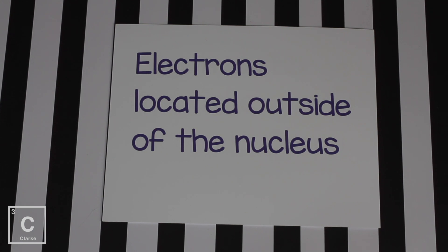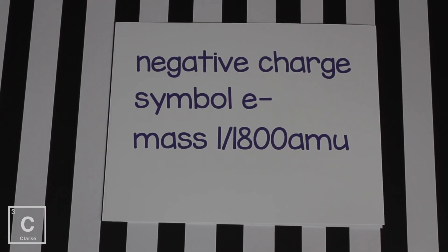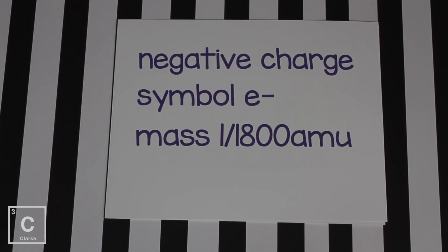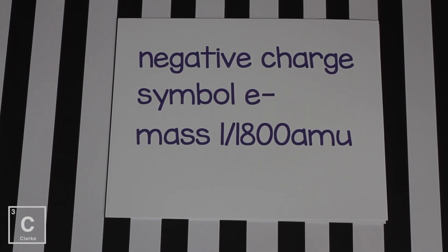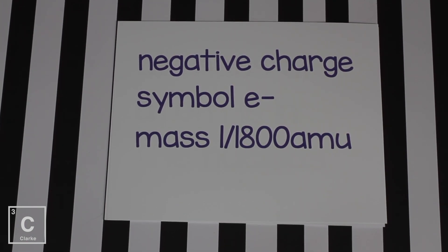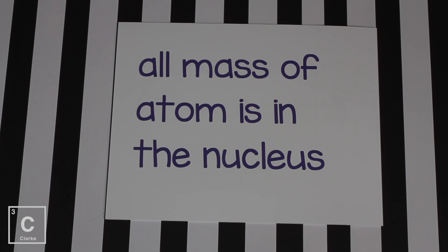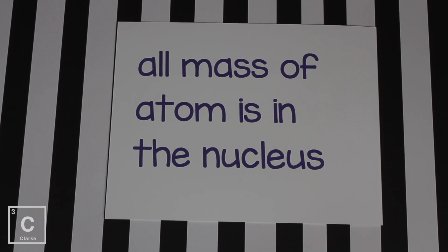Electrons are located outside of the nucleus. They have a negative charge, so their symbol is lowercase e with a negative superscript. Look at that mass — 1/1800 of an AMU. Yes, you're seeing that right. Electrons are teeny tiny. We consider all of the mass of the atom to be in the nucleus, since protons and neutrons both have 1 AMU and the mass of the electron is so tiny it's barely worth mentioning.